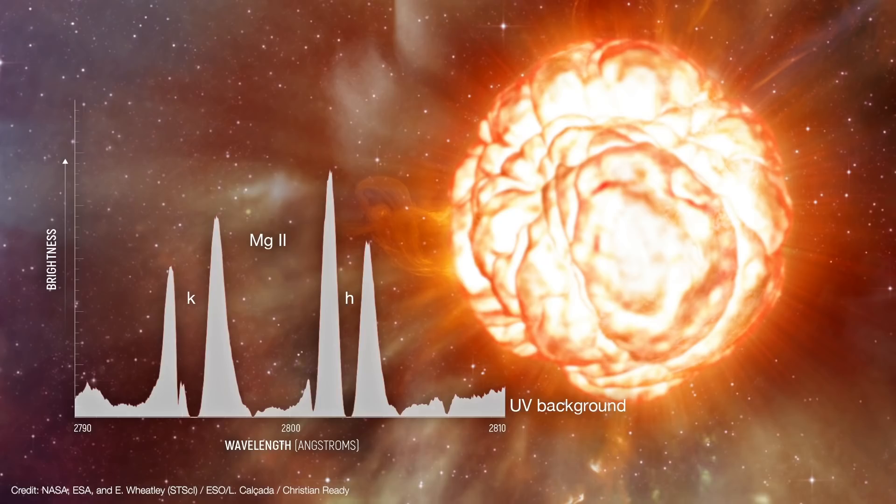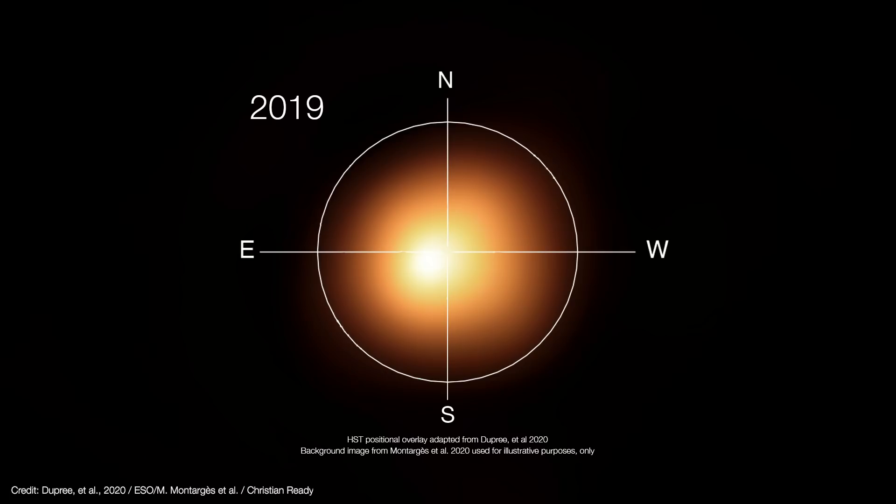You see, the background UV radiation emerges close to Betelgeuse's surface, or whatever counts as a surface for such a distended star. The longer wavelength Magnesium-2-H lines form above that, and the shorter wavelength Magnesium-2-K lines form highest of all in the atmosphere where it's hottest. Now, all of this is going on in the southeast region of Betelgeuse.